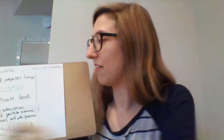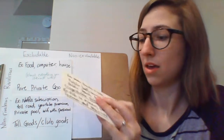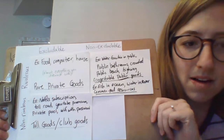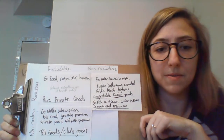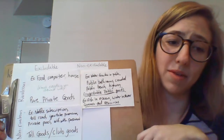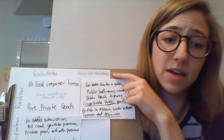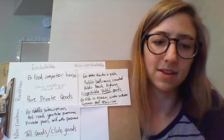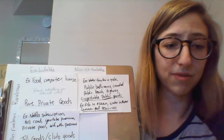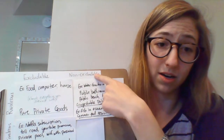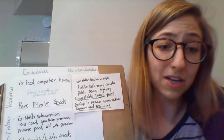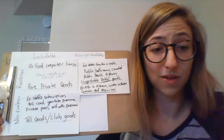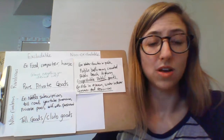Then we have rivalrous non-excludable goods. A public water fountain is non-excludable because anybody can walk up and use it even if they don't pay, and it's rivalrous because you drinking from it affects someone else's ability to drink at the same time. Public bathrooms: using one affects someone else's ability to use it, but anybody can walk in. A public beach: it's crowded so it feels rivalrous — your blanket affects others' space — but anybody can come hang out.